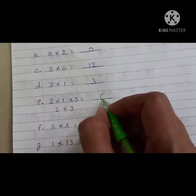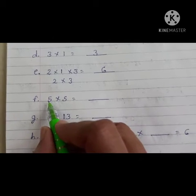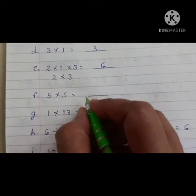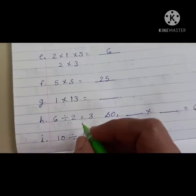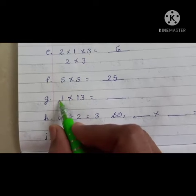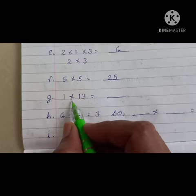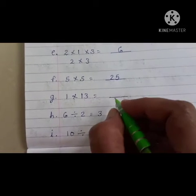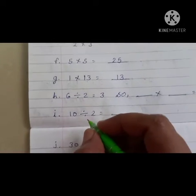Next, F, 5 फाइजा, 25. Next, G, 1 multiply 13. That means, कि 13 बन जा, 13.